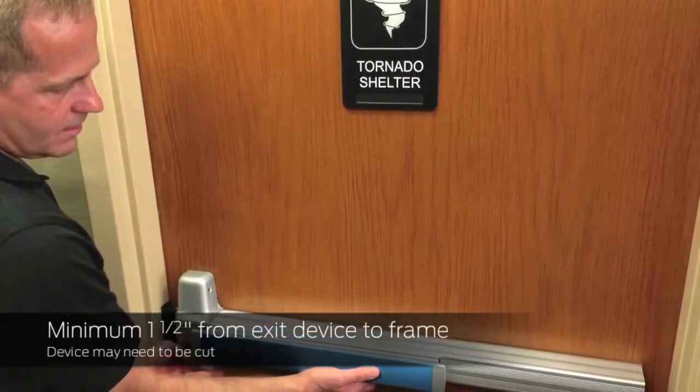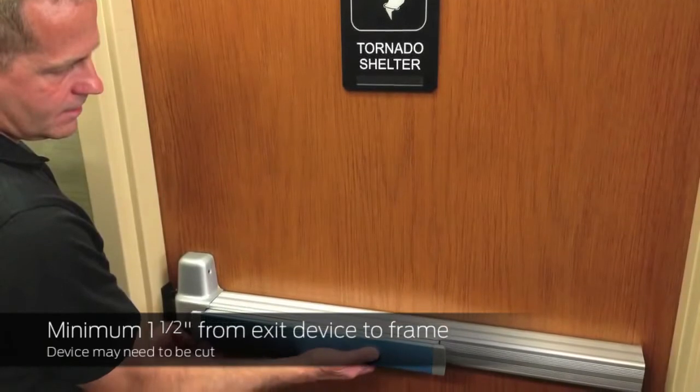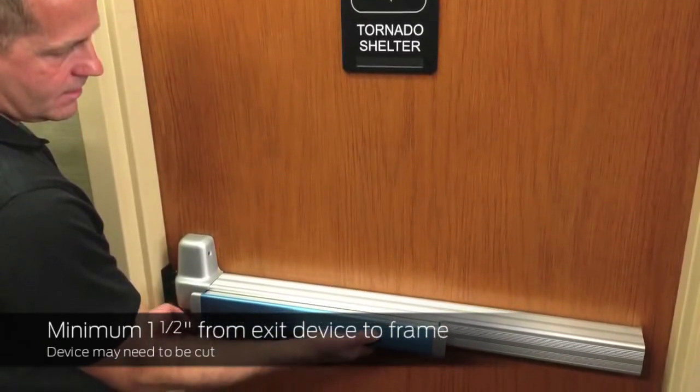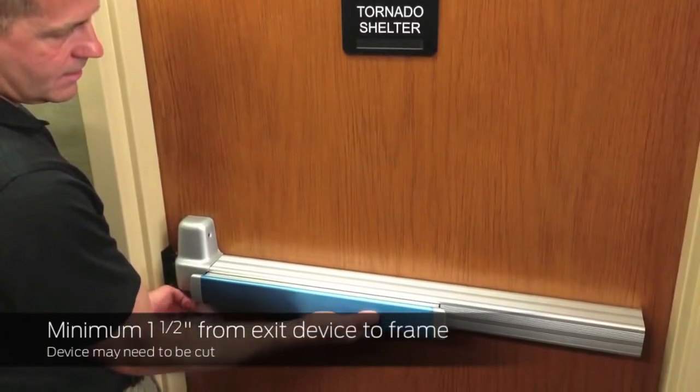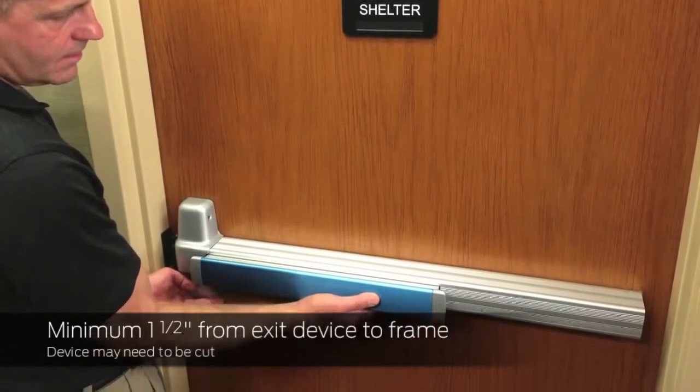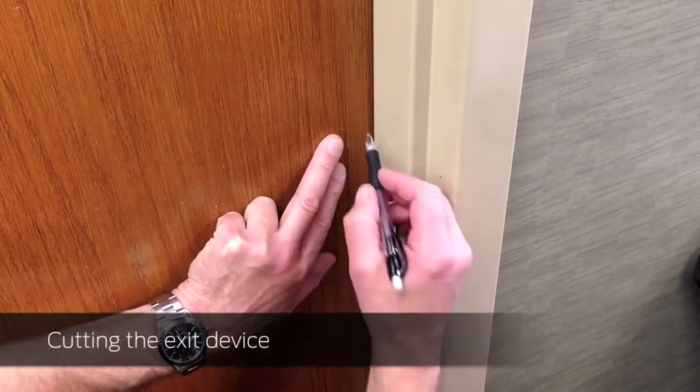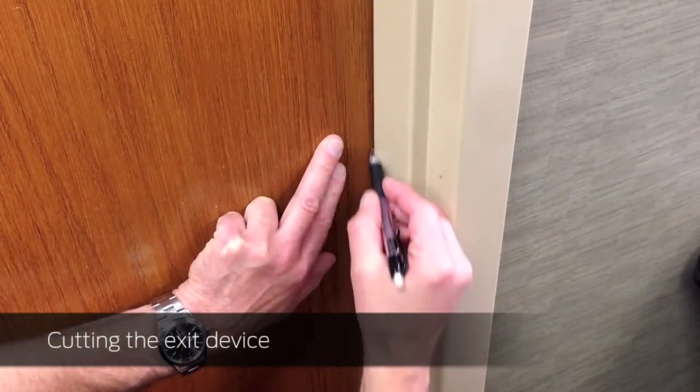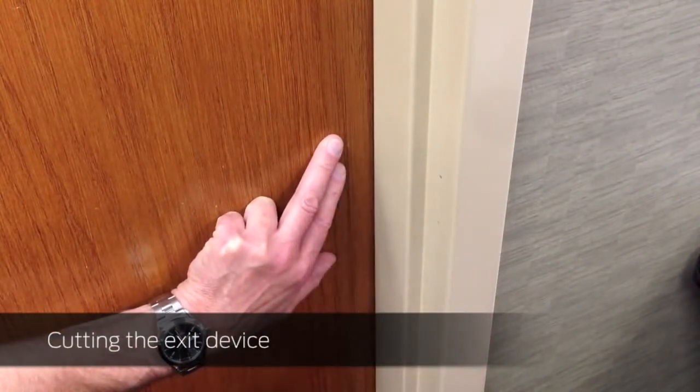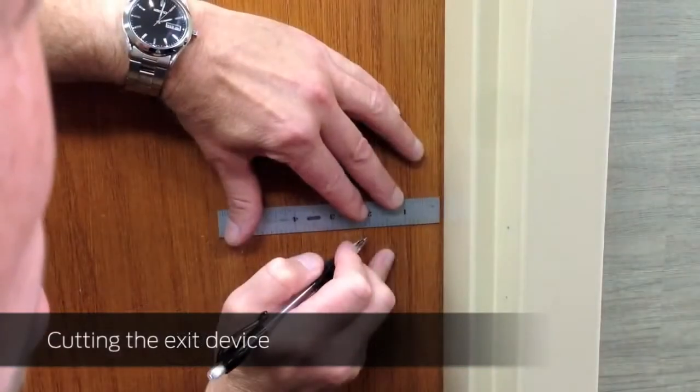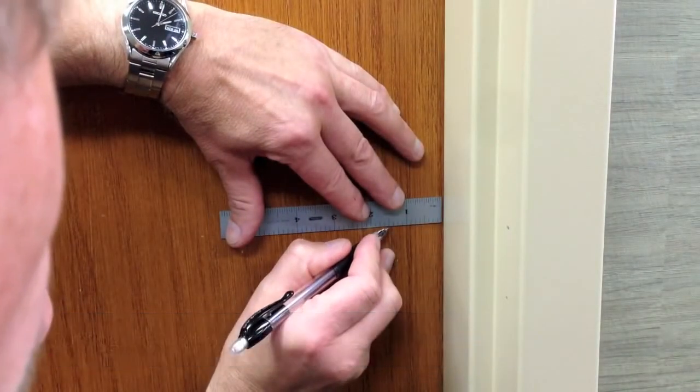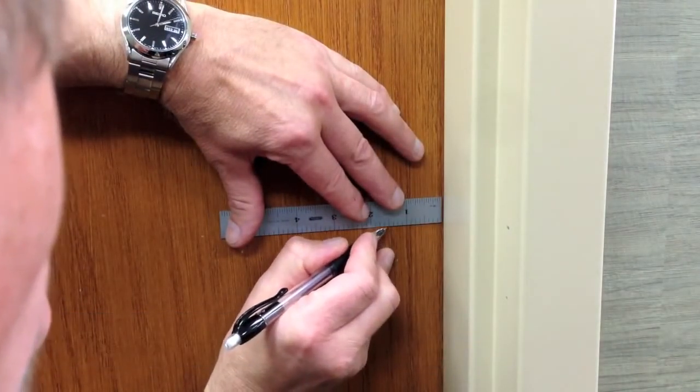There must be a minimum of 1½ inches clearance between the end of the exit device with the end cap removed and the frame. If there is not, your exit device will need to be cut. With the door closed, mark the position of the stop on the door. Measure and mark a line that is a minimum of 1½ inches from that mark.